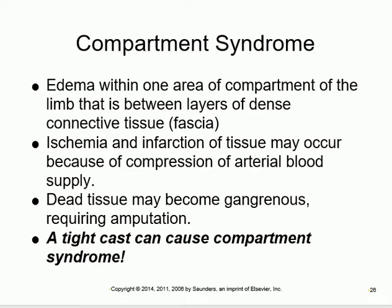Compartment syndrome occurs when a cast is too tight. The cast must not be too loose - the bone will move and take longer to heal - but it must also not be too tight, as that will compromise blood supply, cause edema, and lead to compartment syndrome. A tight cast causes ischemia and may even lead to gangrene.